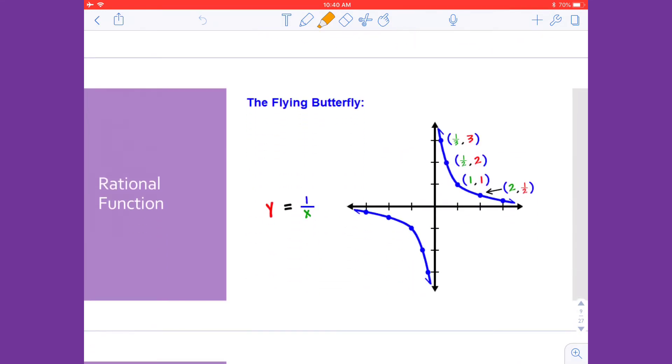And my last parent function is the rational function. This one's a little unique. If you tilt your head a little to the left and look at the image I have, do you see the butterfly wings? It kind of has that butterfly shape to it, so that's how I remember it. It's the butterfly graph. It's kind of an awkward, weird-looking graph. It's the only one that does not even touch the origin. Its equation is y equals 1 over x.